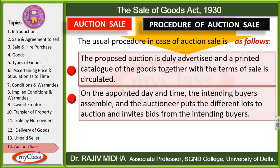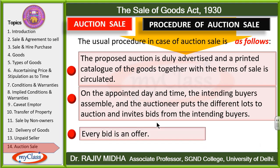On the appointed day and time, the intending buyers assemble at the venue. The auctioneer puts the different lots to auction — for example, computers, refrigerators, microwave ovens, dishwashers — इन सारी चीज़ों का एक lot बनाके अलग कर देगा। He invites bids from the intending buyers, and every bid is an offer — हर bid एक offer है।